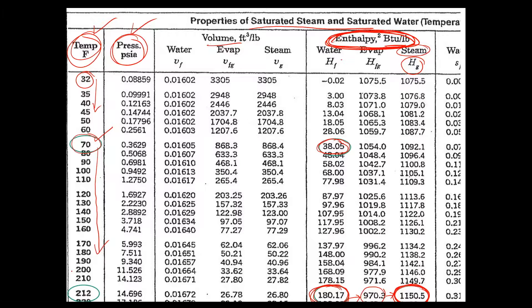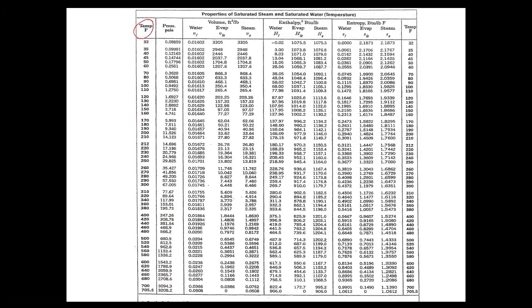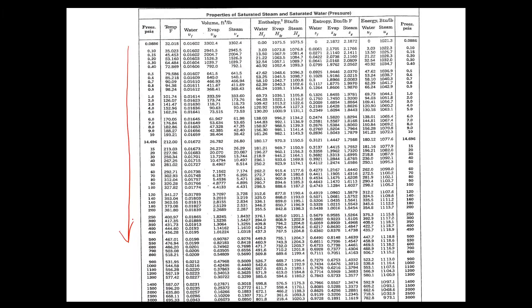This table is organized by temperature — even numbers going down the page — so we can find the enthalpy given any temperature. For example, at 260°F, the enthalpy in the water state is about 228, and as steam it would be 1167. The next page organizes enthalpy by pressure. This is given in PSIA — PSI absolute — which equals gauge pressure plus 14.6. So given any temperature or pressure, we can find the enthalpy values from these columns.